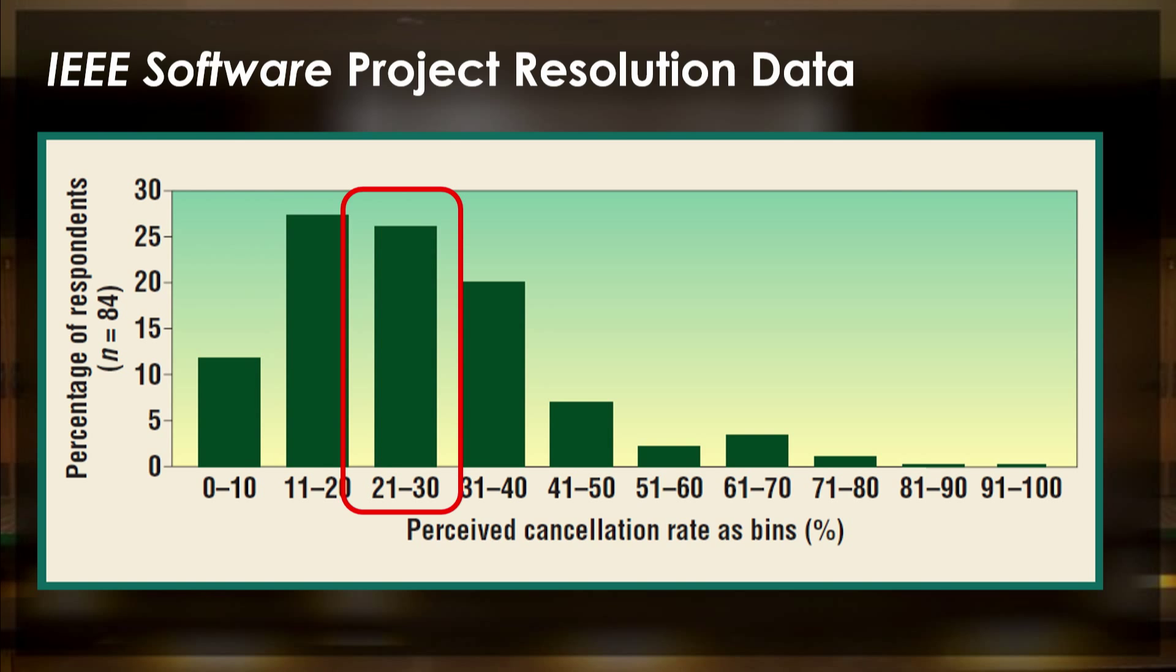Second most common is 21 to 30 percent. Third most common is 31 to 40 percent. And collectively, what we see is basically a confirmation of the Standish Group Chaos Report that something on the order of about a quarter of all projects actually fail to the point that they are canceled. And this is kind of a big deal.